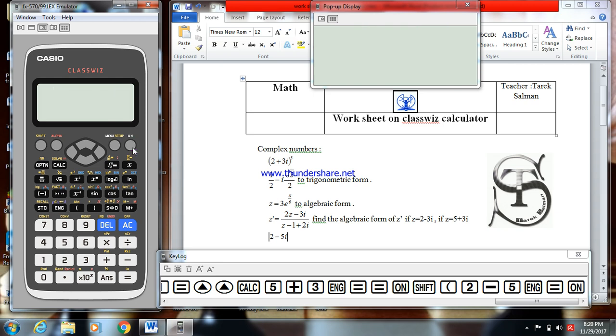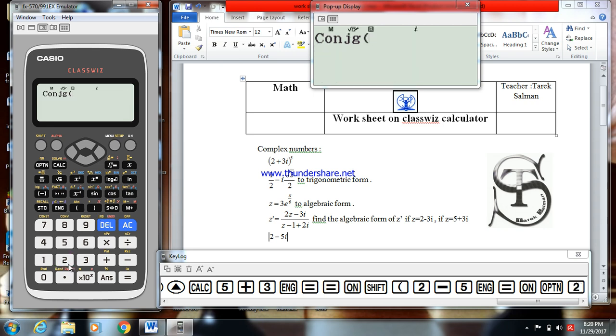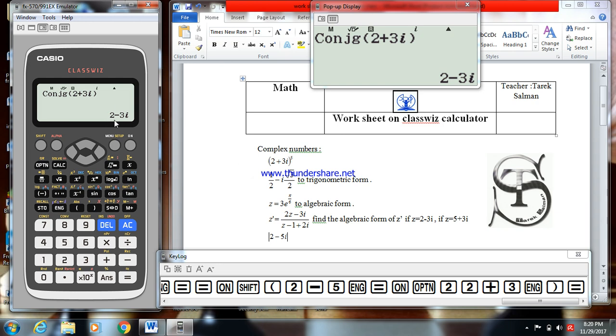Now if I want to calculate the conjugate of a complex number. Option. You have here conjugate, 2. Conjugate, for example, of 2 plus 3i. The conjugate of 2 plus 3i, equal. Here we have the answer, 2 minus 3i. Okay. Now, thank you to see this video.